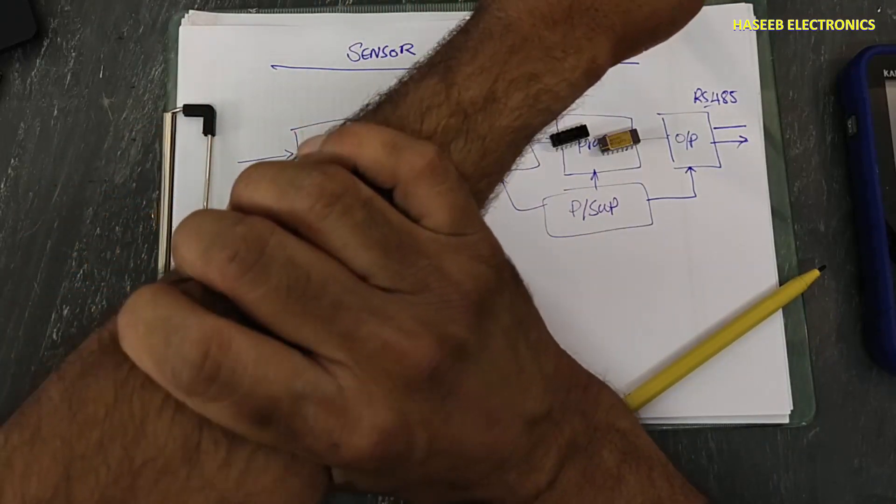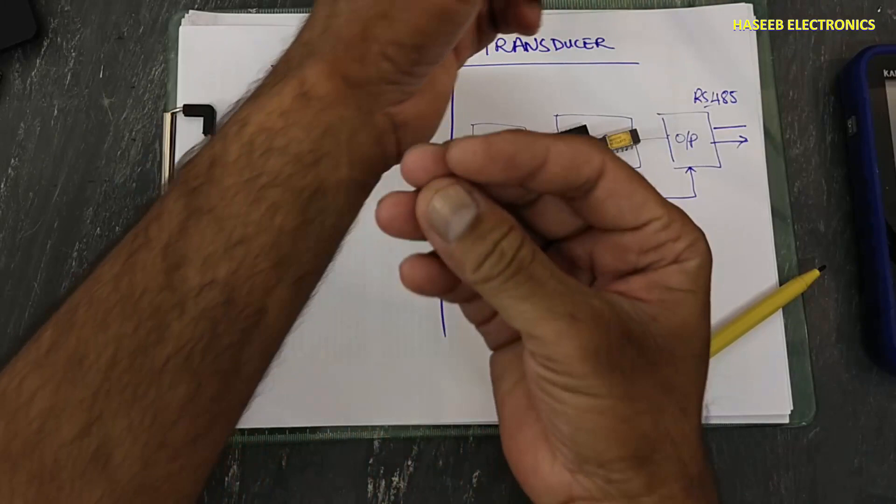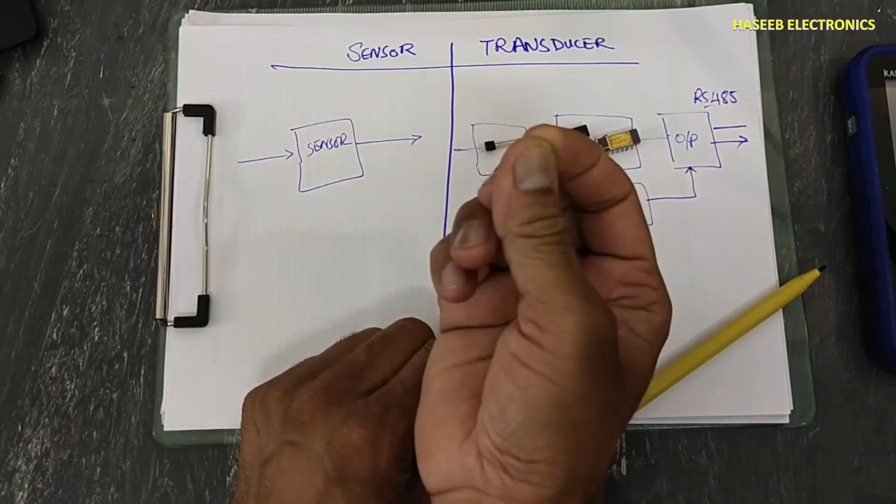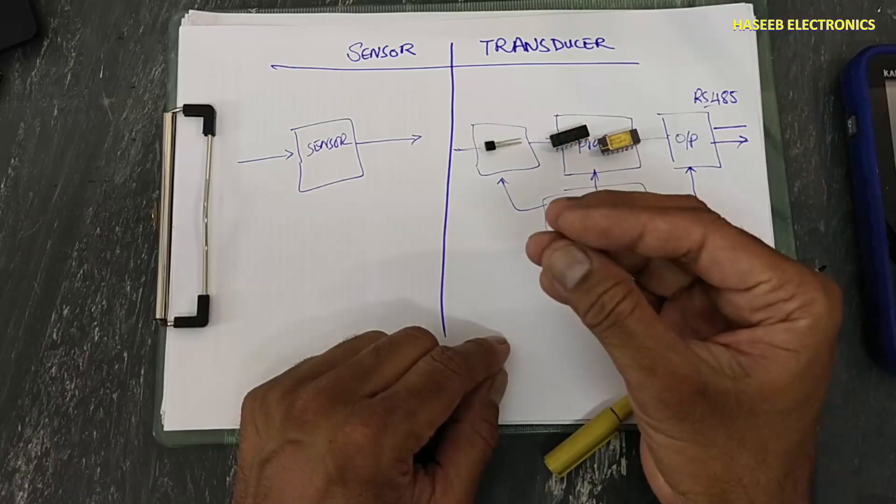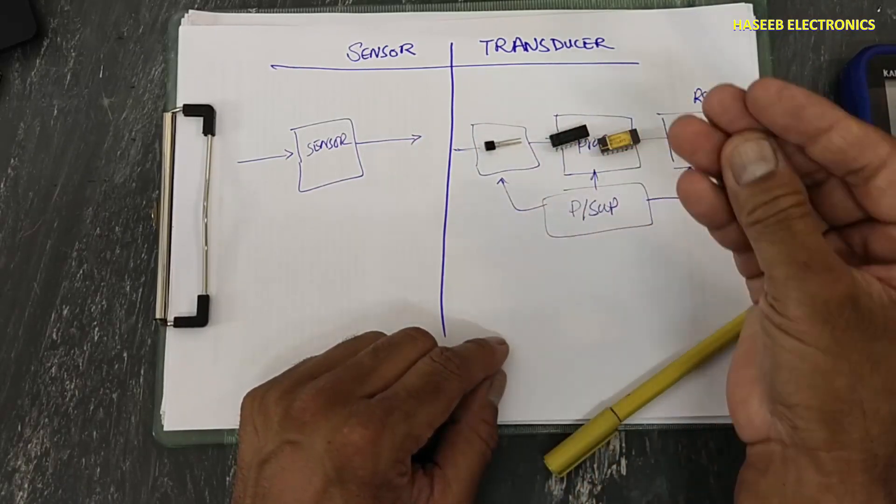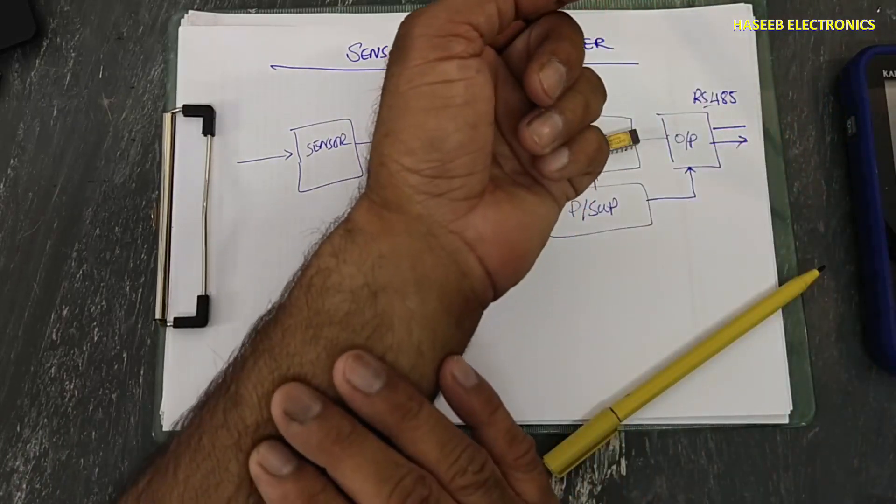It will sense the blood pressure from here, it will convert into equivalent electrical signal, then the conversion circuit will convert into any readable data and we will receive a digital readout - how much blood pressure is there, how much pulse rate is there.